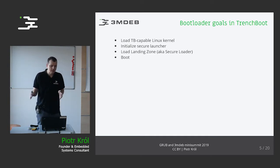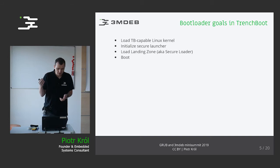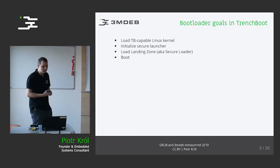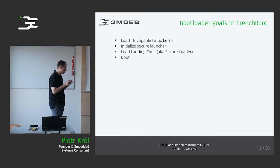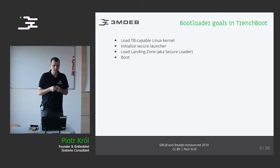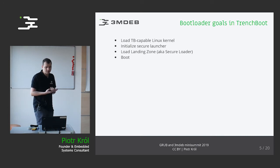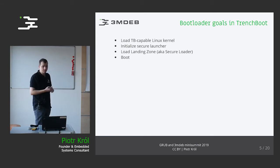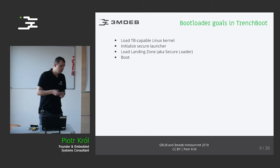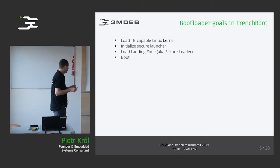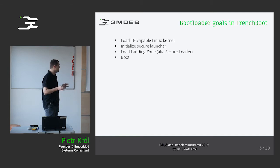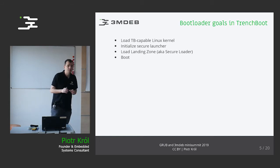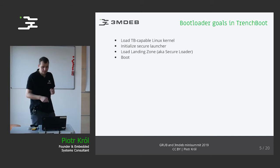First, it has to load a Trenchboot-capable Linux kernel. It has to initialize the secure launcher, which is a small open source binary. Then it has to load the secure launcher — which we call the landing zone — and execute it. There are special ways this can be executed involving a small piece of assembly.